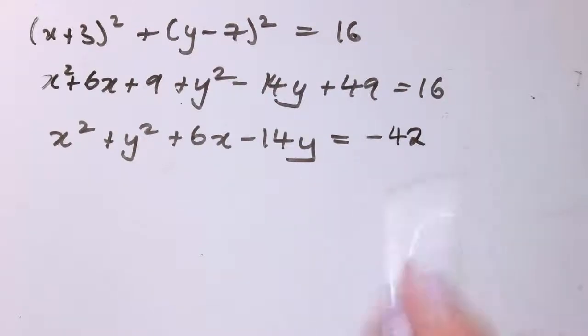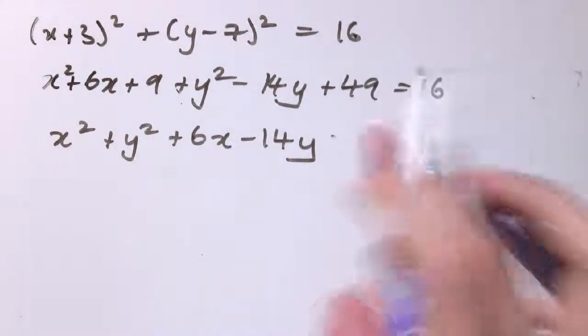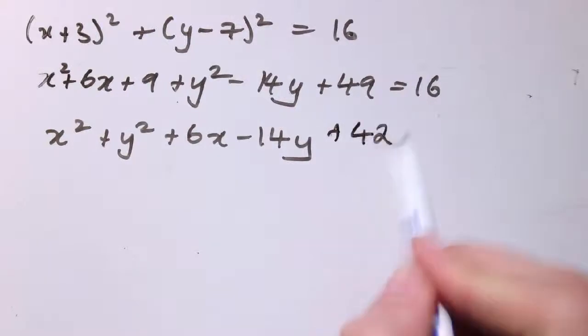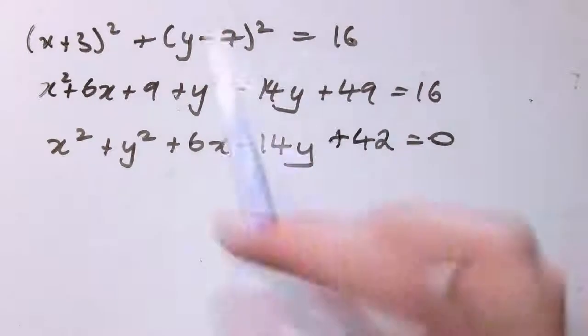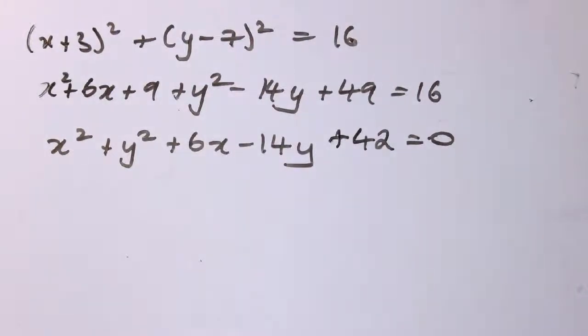Or I could even add the 42 to both sides and say plus 42 equals 0. So that's another way of writing down the equation of a circle. It's still the same equation so it must still represent that circle that goes through minus 3, 7 and has radius 4.